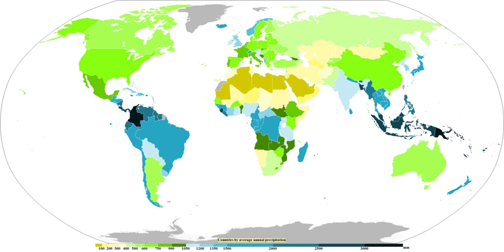The dew point is the temperature to which a parcel must be cooled in order to become saturated and condenses to water. Water vapor normally begins to condense on condensation nuclei such as dust, ice, and salt in order to form clouds. An elevated portion of a frontal zone forces broad areas of lift, which form cloud decks such as altostratus or cirrostratus. Stratus is a stable cloud deck which tends to form when a cool, stable air mass is trapped underneath a warm air mass.